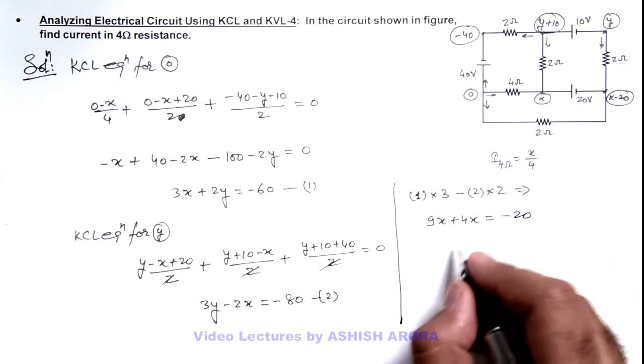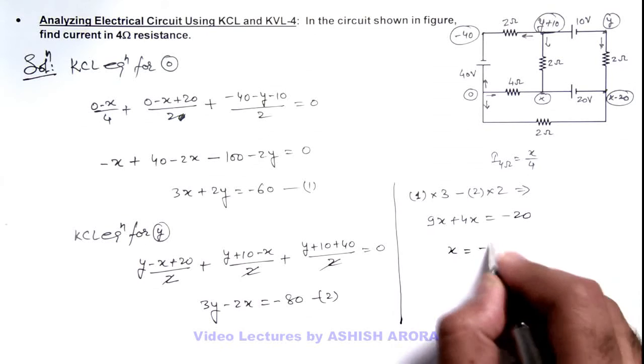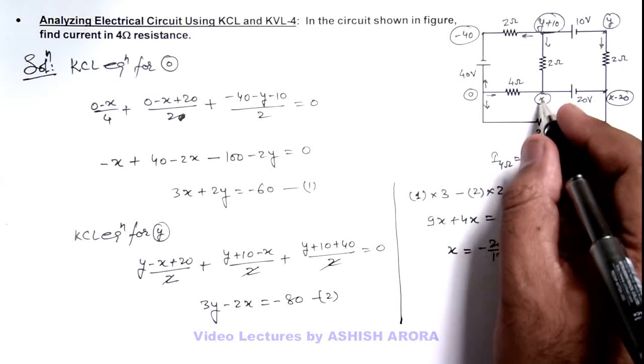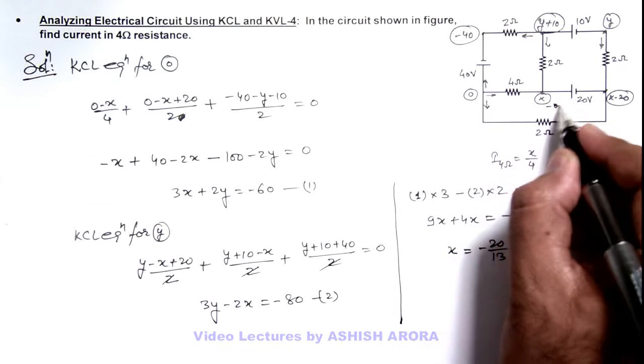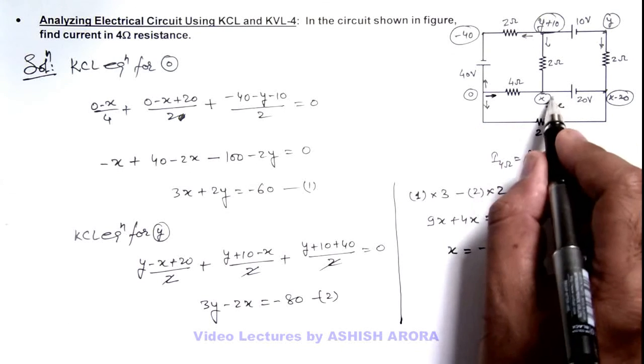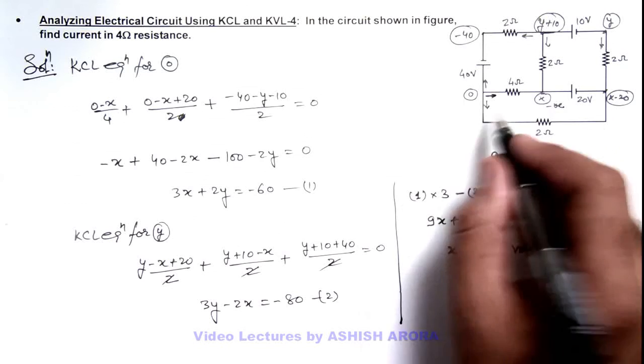Further simplifying, I am getting the value of x is minus 20 by 13 volts. So as I have got the value of x, but the value of x is negative, that means this current is flowing from zero to this negative potential, as it flows from high to low potential.